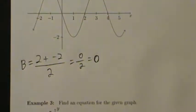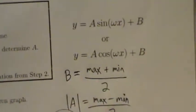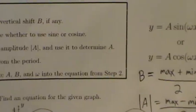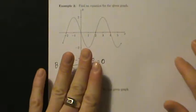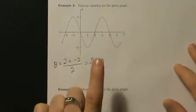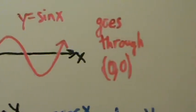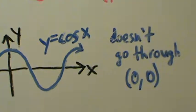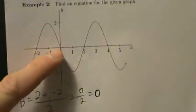Two plus negative two is two minus two, which is zero. So this is zero over two, which is just zero — there is no vertical shift. Now step two: determine whether to use sine or cosine. We know there's no phase shift and no vertical shift, and sine of x passes through (0, 0) while cosine of x does not.